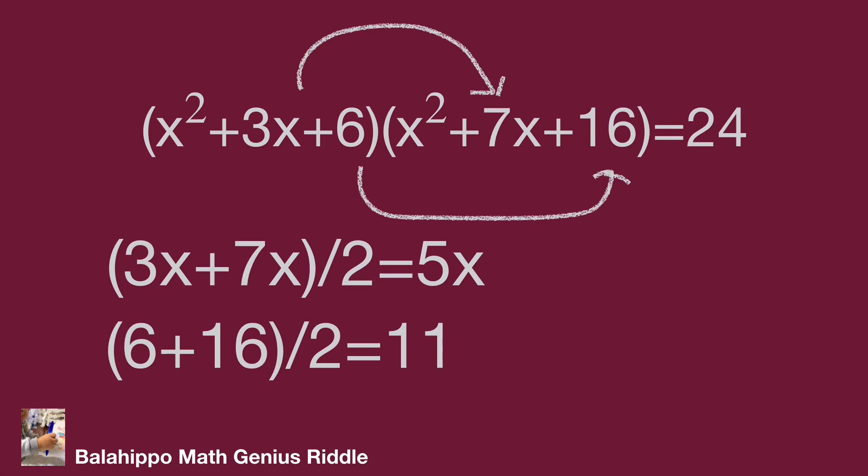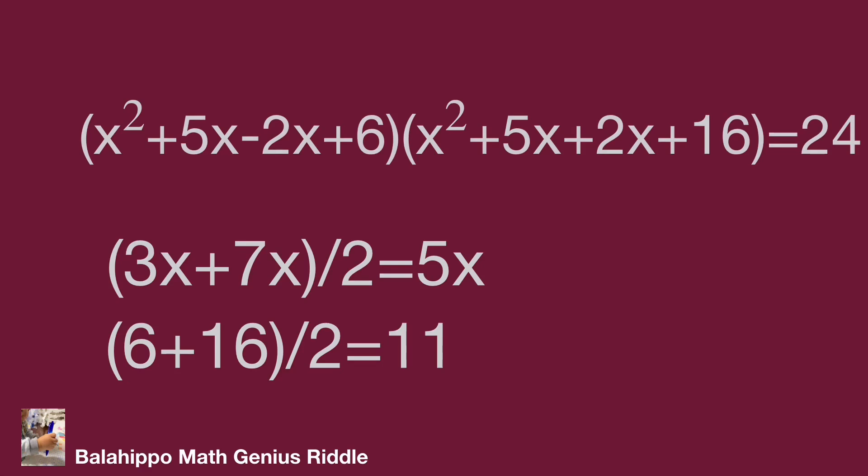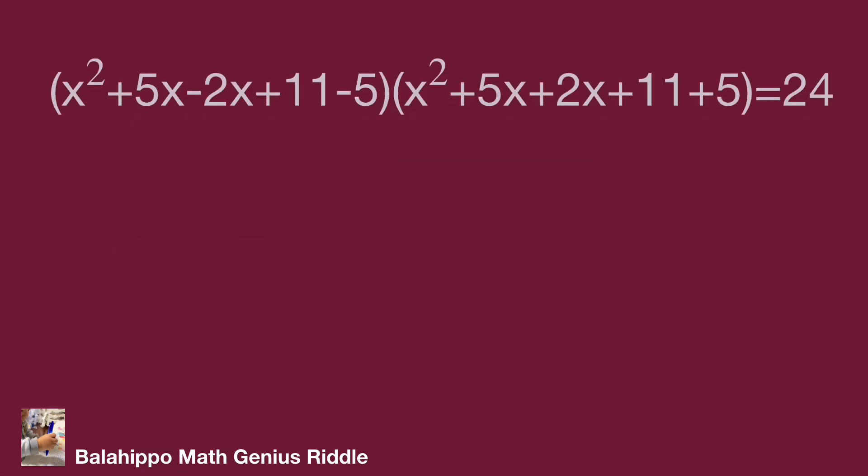First, replace 3x with 5x in the first quantity and 7x with 5x in the second quantity. We find there is now the same term 5x, with minus 2x in the first quantity and plus 2x in the second. Next, to handle the numbers 6 and 16, distribute these two numbers around 11: so 6 equals 11 minus 5 in the first quantity, and 16 equals 11 plus 5 in the second quantity.